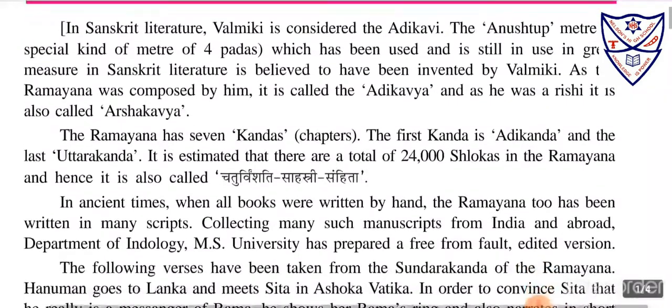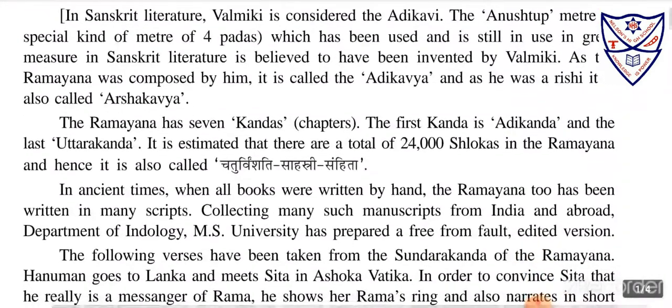First we will learn the introduction. In Sanskrit literature, Valmiki is considered the Adi Kavi. In the Ramayana, there are seven Kandas. The first Kand is Adi Kand, meaning Bal Kand. Second is Ayodhya Kand. Third is Aranya Kand. Fourth is Kishkindha Kand. Fifth is Sundar Kand. Sixth is Yuddha Kand, otherwise called Lanka Kand. And seventh is Uttar Kand.